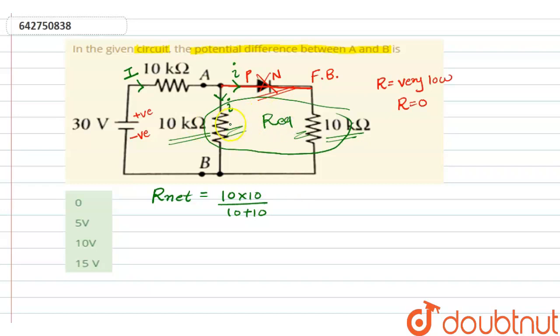This is our equivalent for both resistances. This equivalent and this 10 kilo-ohm is connected in series, so let's add 10. So R-net will be 15 kilo-ohm.